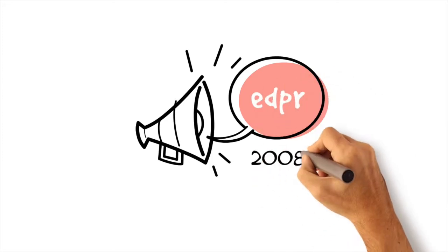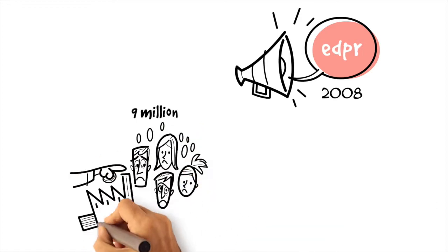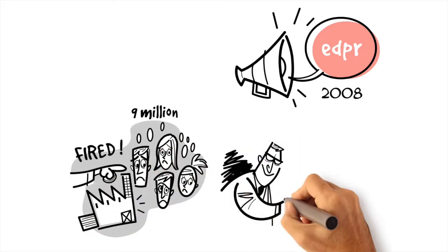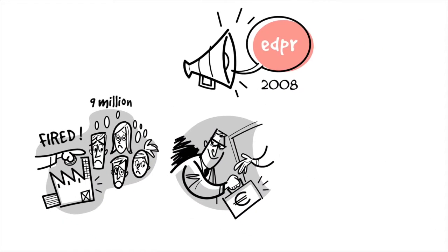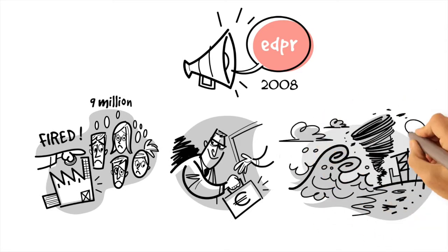Since EDPR went public in 2008, 9 million jobs were lost in Europe, multiple corruption scandals were uncovered, and famous environmental catastrophes ruined our coast and land.